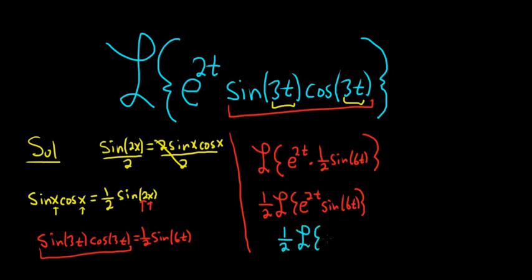And then we can replace this with the shift. The shift goes from s to s minus whatever number is here. So in this case, s minus 2.